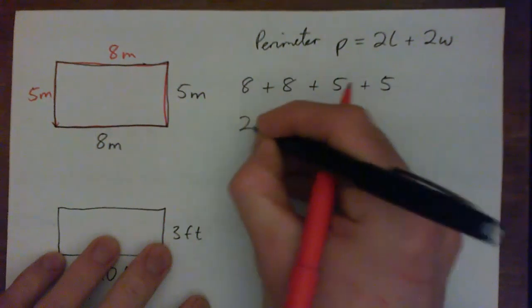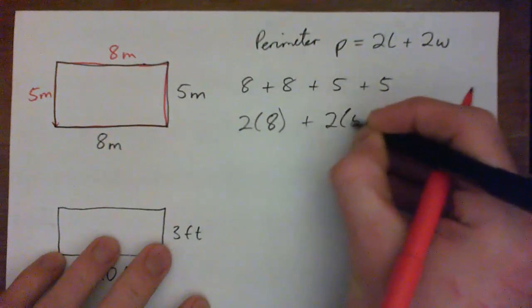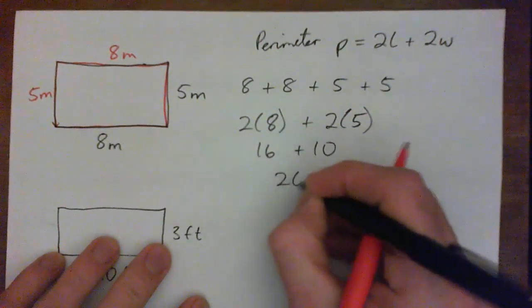Or in other words, 2 times 8, which is 2 times the length, plus 2 times 5. So 16 plus 10 equals 26 meters.